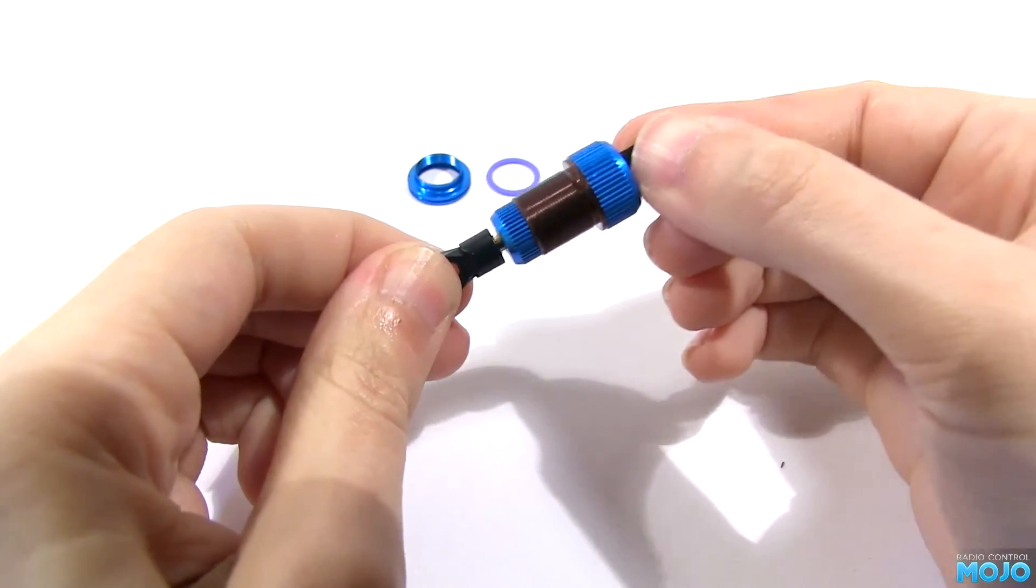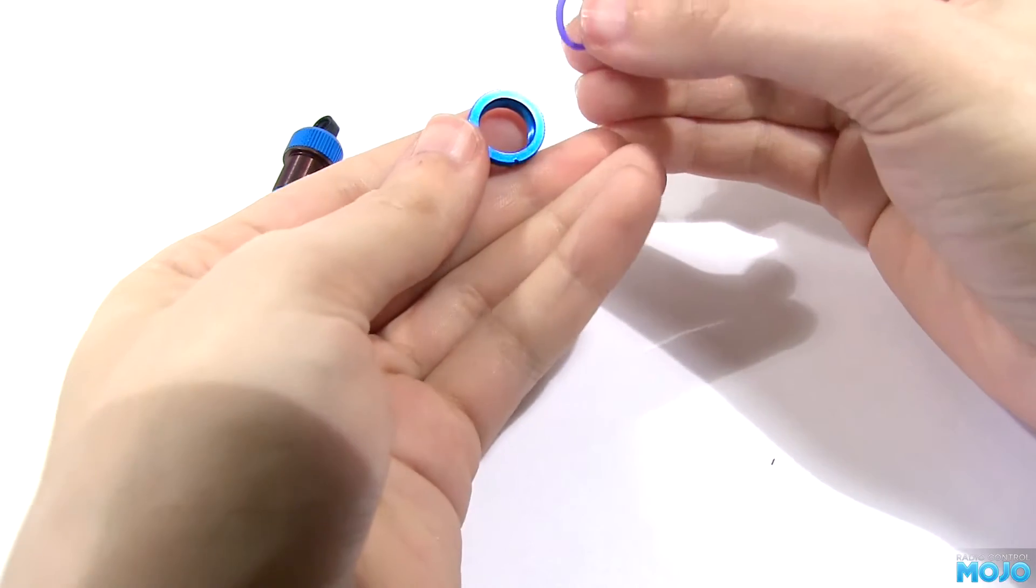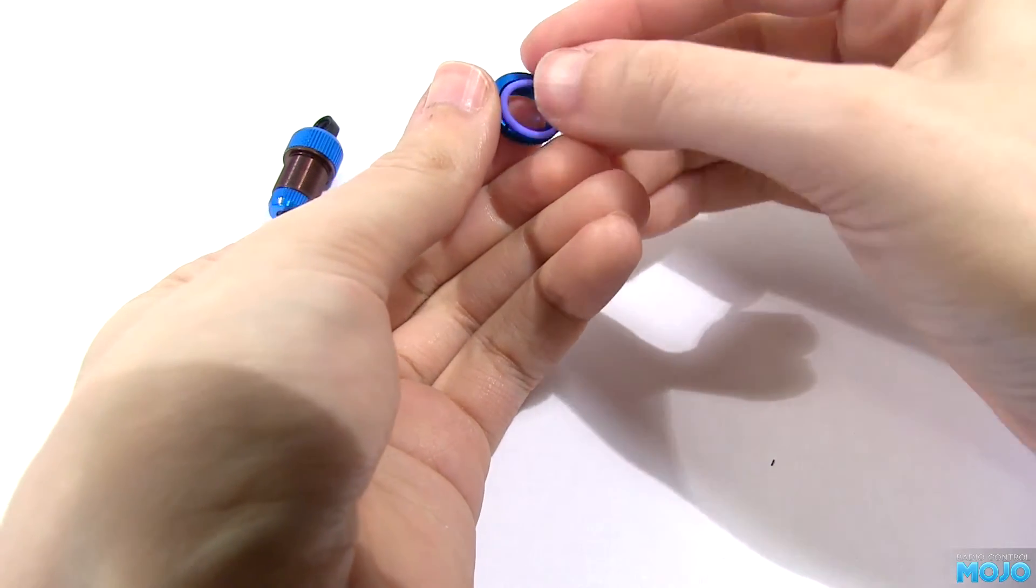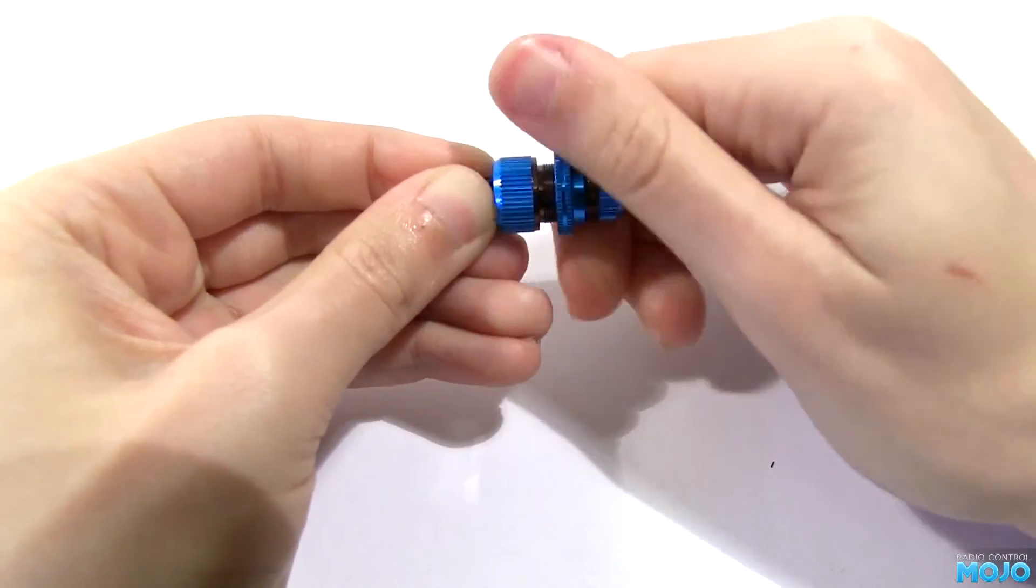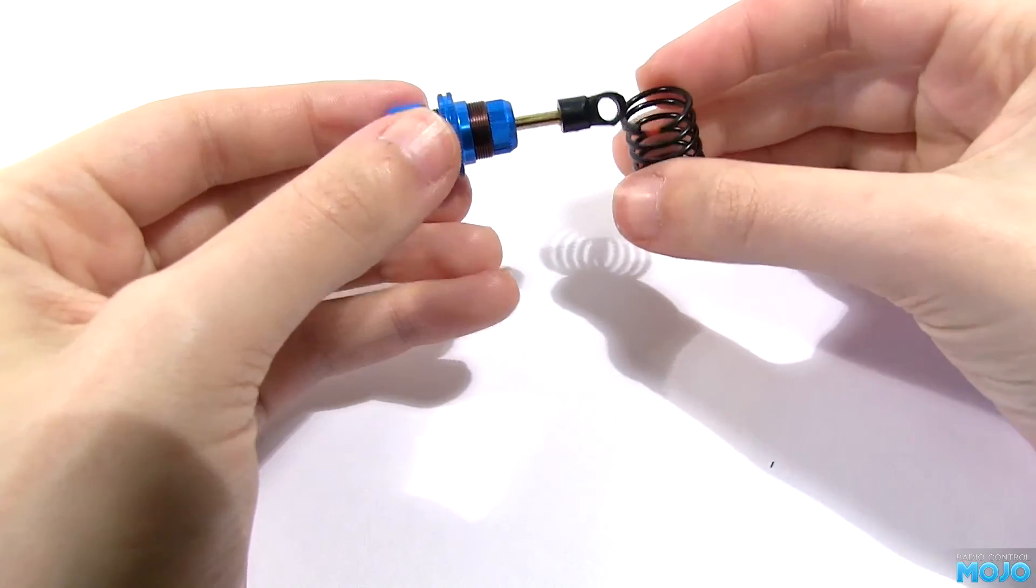Nearly there now. Take the cylinder nut and install the selected anti-slip o-ring. It just pops into a slot inside. Thread it on most of the way up the damper body. Install the spring.